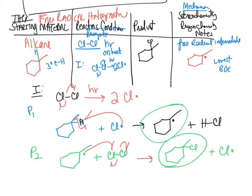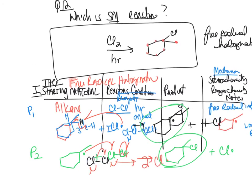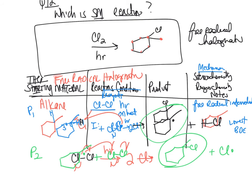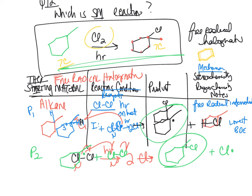The answer for Q12 is methylcyclohexane. The other choices were wrong because: plain cyclohexane only has six carbons but the product has seven carbons — you're only adding a chlorine, not carbons; a compound with a double bond is not an alkane starting material for this reaction; and an alkyl halide is not the starting material — free radical halogenation starts from an alkane.